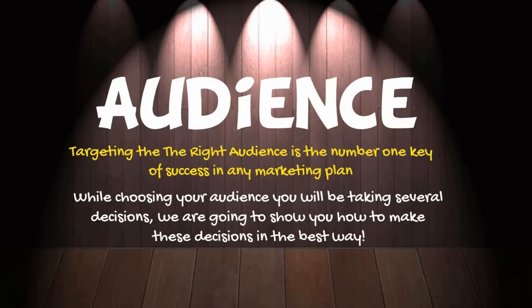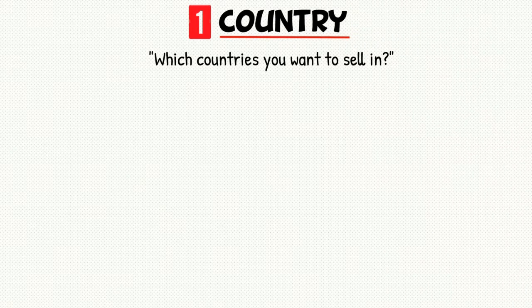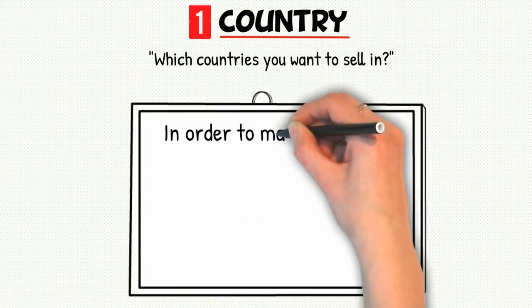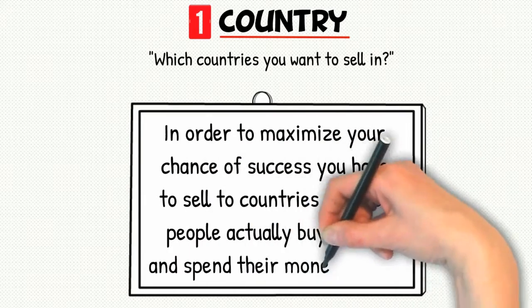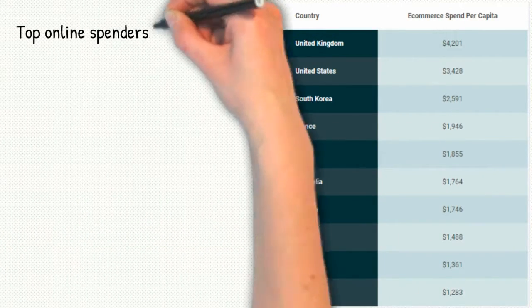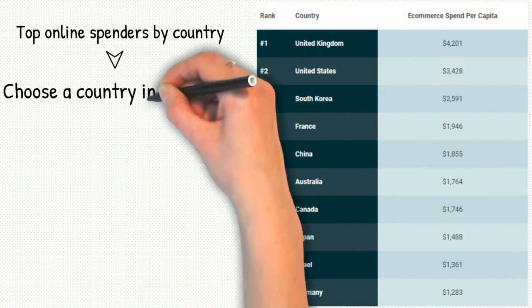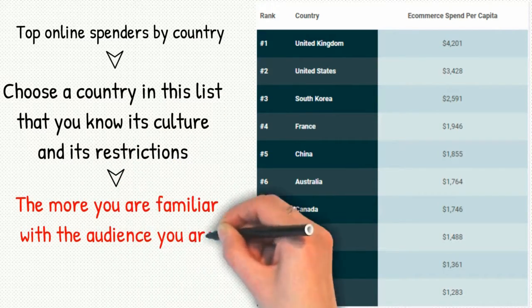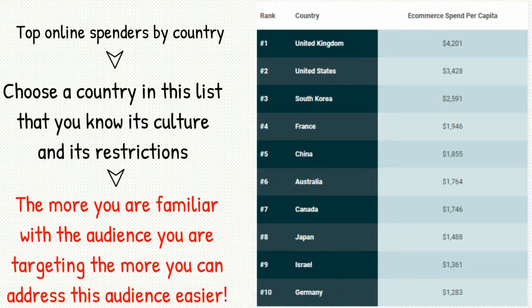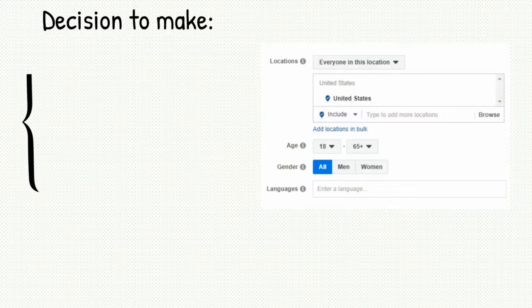The first decision you should be taking is in which countries you want to sell. In order to maximize your chance of success you have to sell to countries in which people actually buy online and spend their money online. Here is a list of top online spenders by country. Try to choose a country in this list that you know its culture and its restrictions the most. The more you are familiar with the audience you are targeting, the more you can address this audience easier.